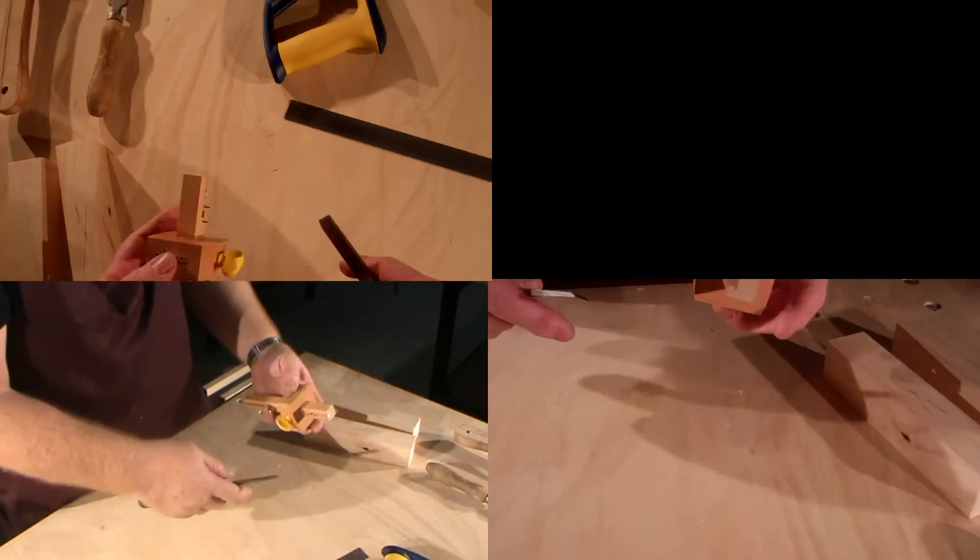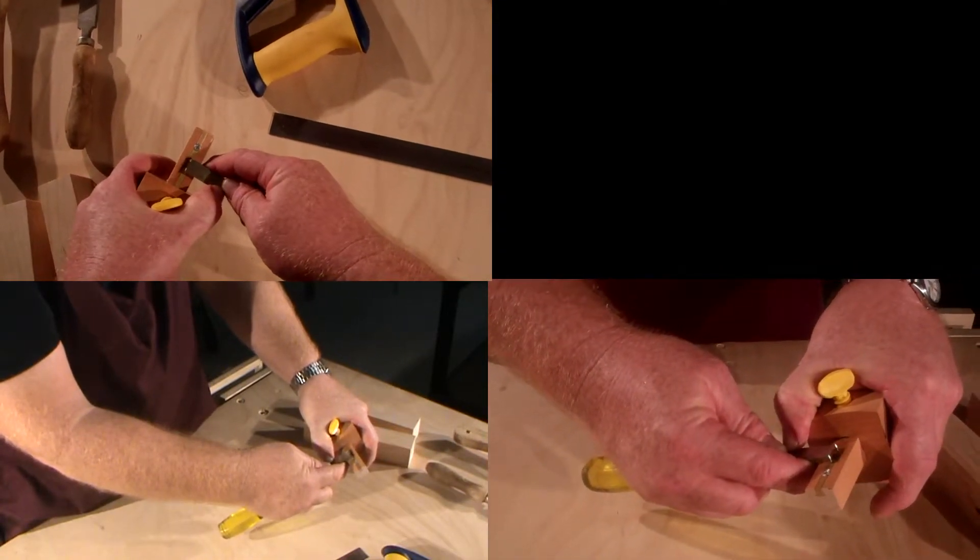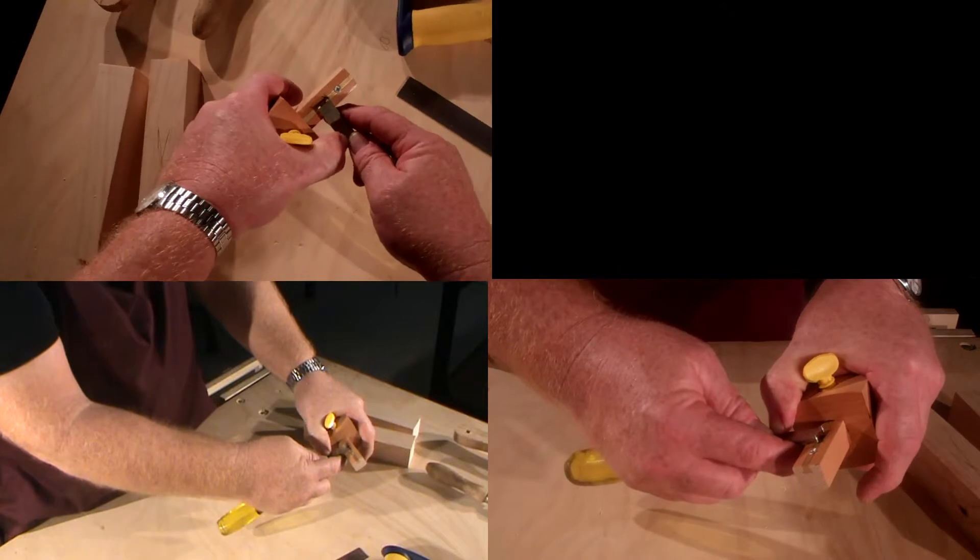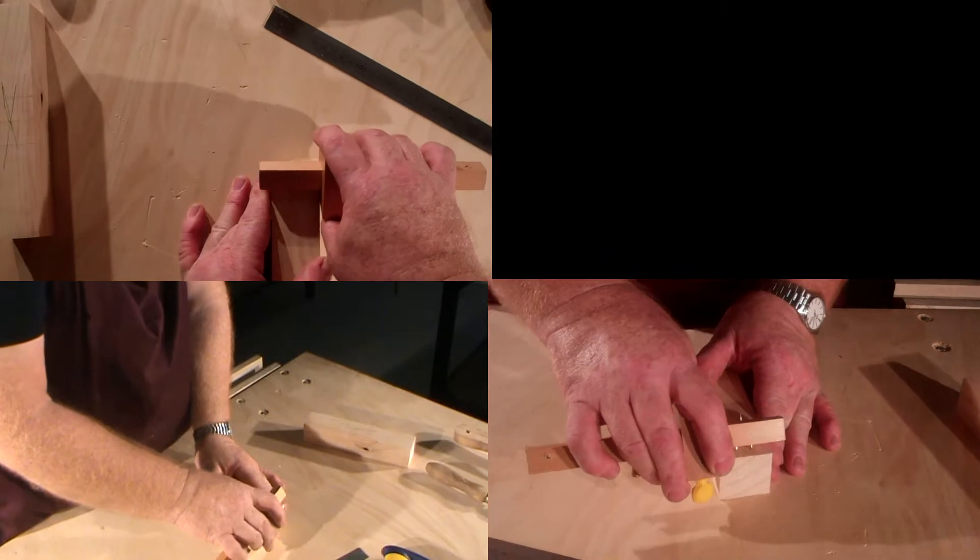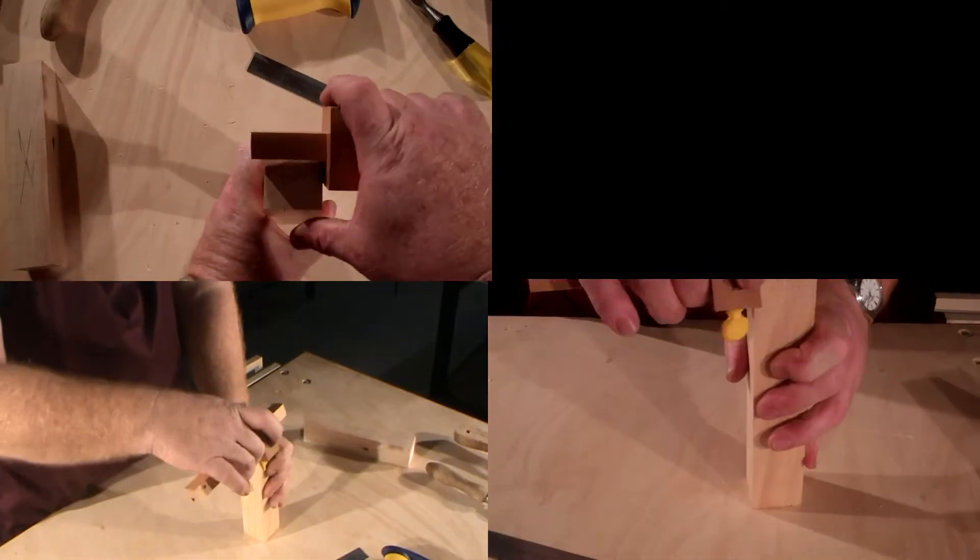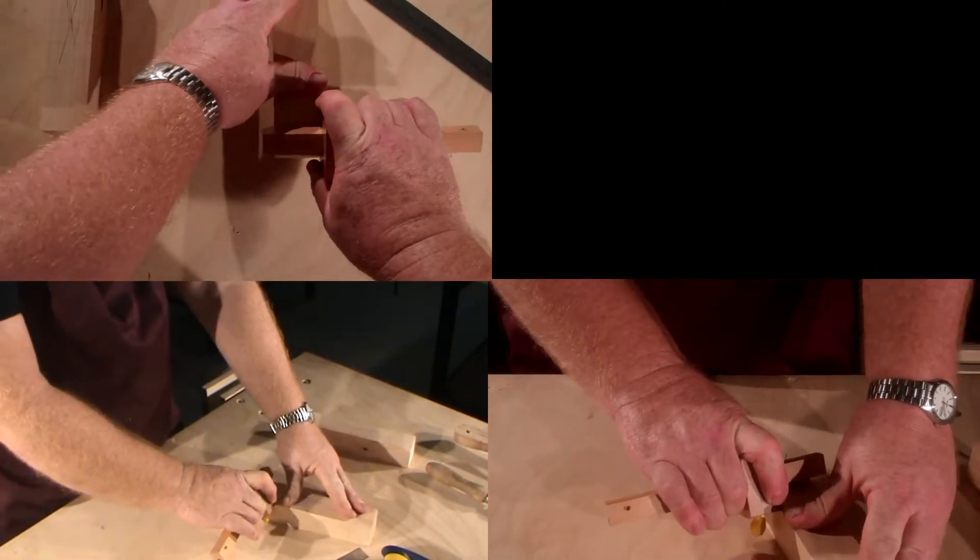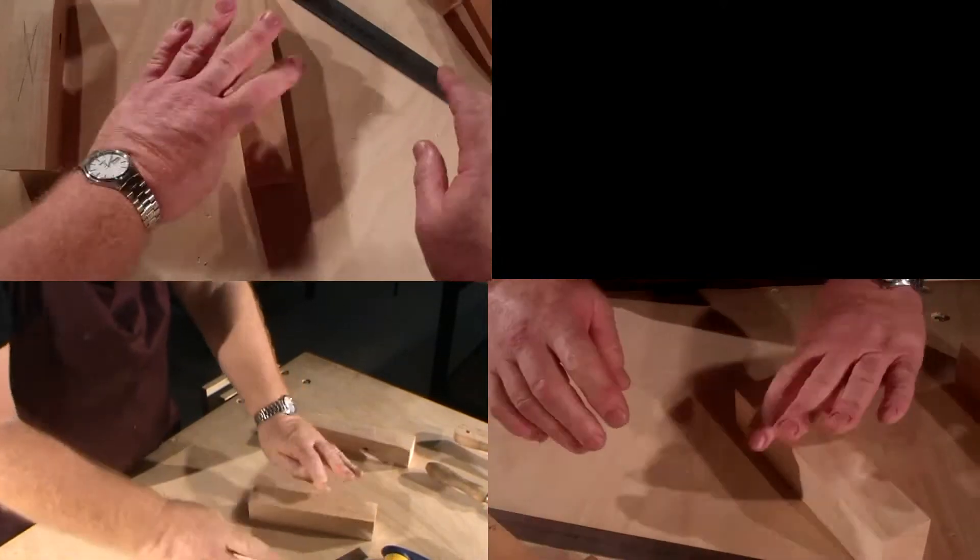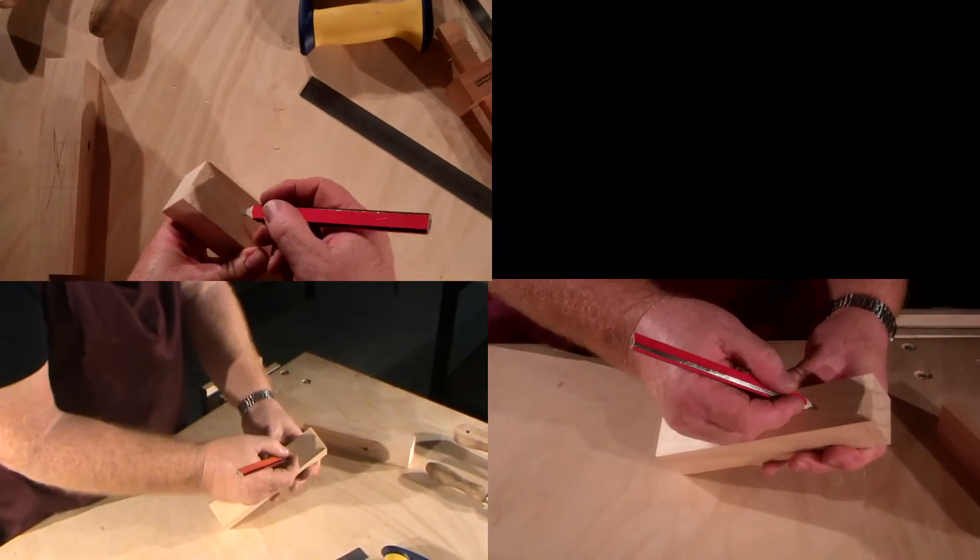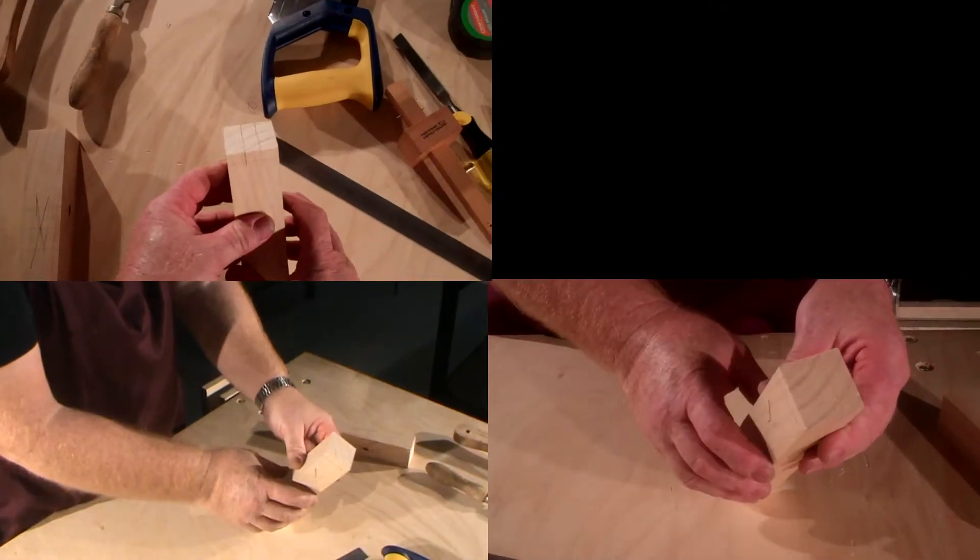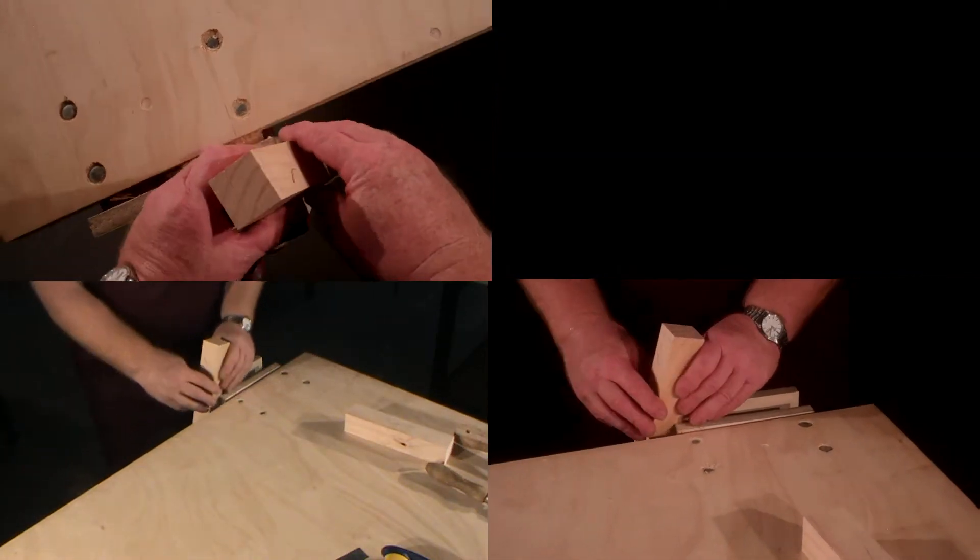Next I'll show you the mortise gauge which has been set to the width of the chisel. Let's start by marking out the tenon. We've marked that all the way around, I'll put a face mark on this side, and we're ready to cut.